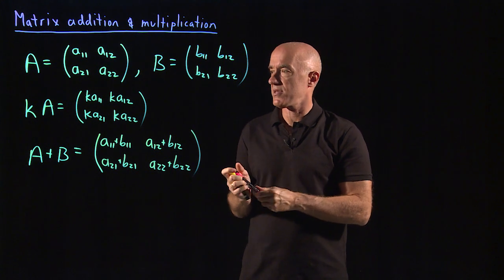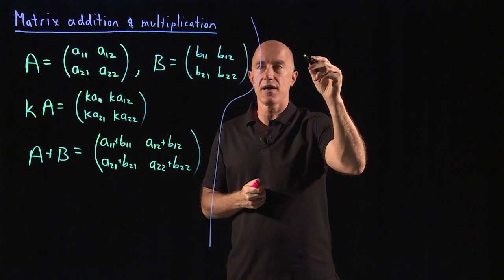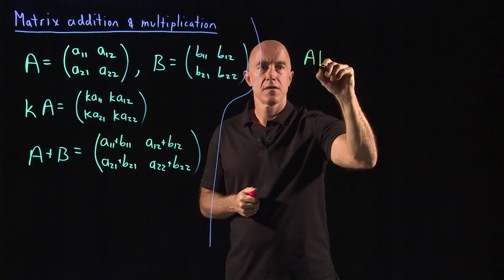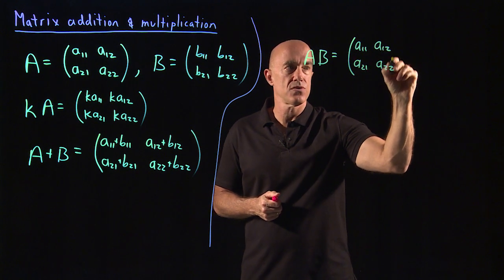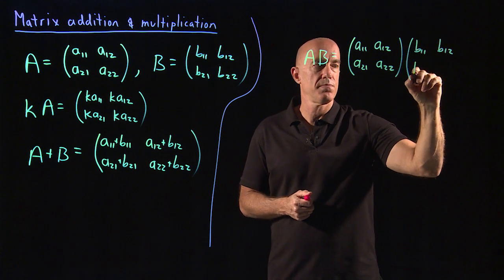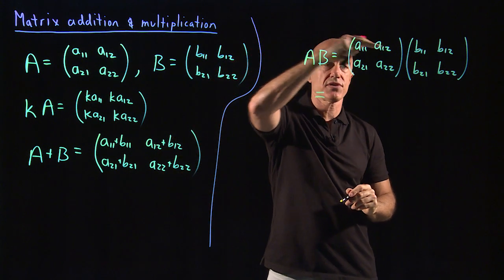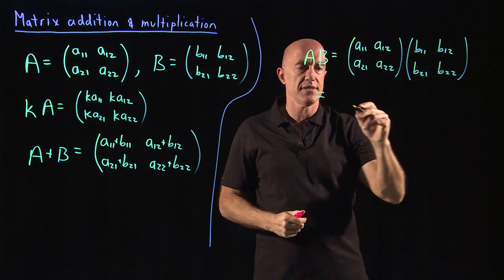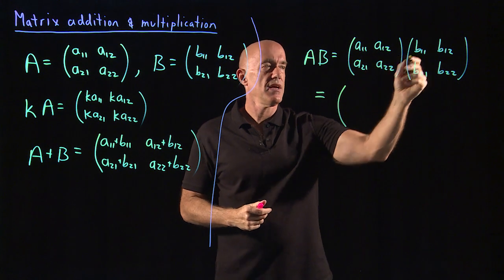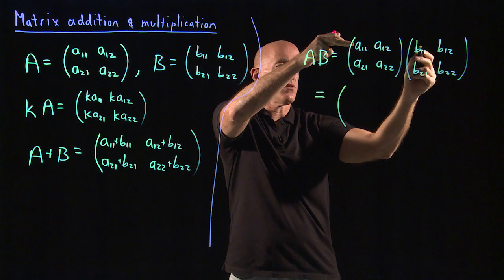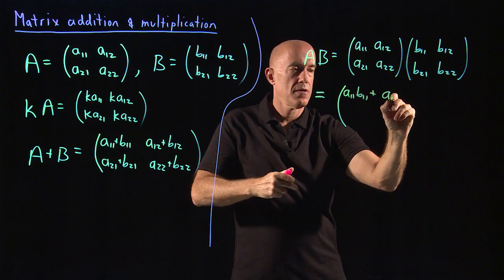The more complicated operation is matrix multiplication. So let's learn how to multiply two matrices. If we have A times B: A11, A12, A21, A22 times B11, B12, B21, B22. The way that you multiply matrices is you go across a row of the first matrix and down a column of the second matrix. So the first element is found by going across the first row of the left matrix and down the first column of the right matrix, giving A11·B11 plus A12·B21.